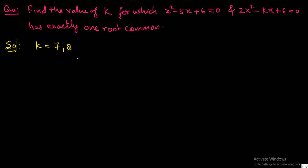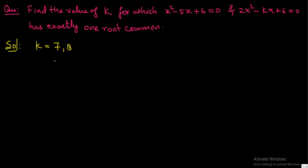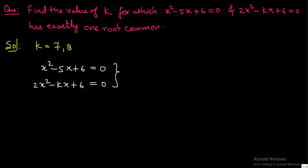Now there will be a question in your mind: why do you have two answers? It might be possible that you have two values. First, we can see the exactly one root common condition — how do we apply it? We can see x² minus 5x plus 6 equal to 0 and 2x² minus kx plus 6 equal to 0. There is exactly one root common condition, so apply b² equal to ac.